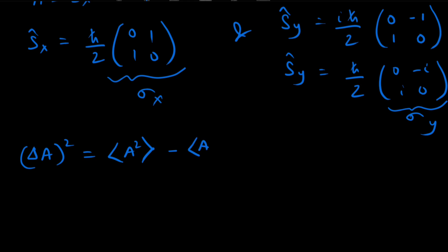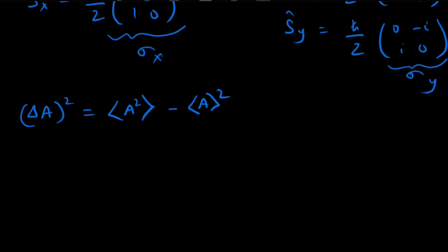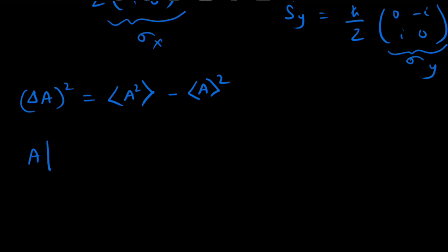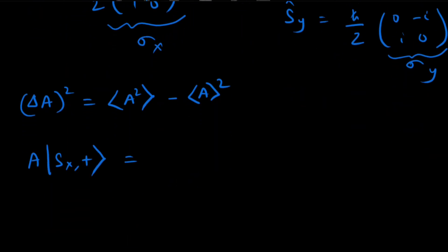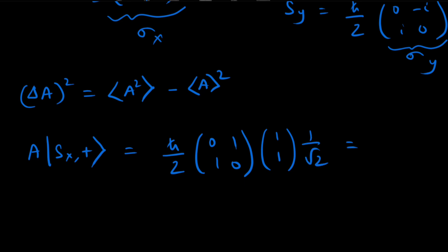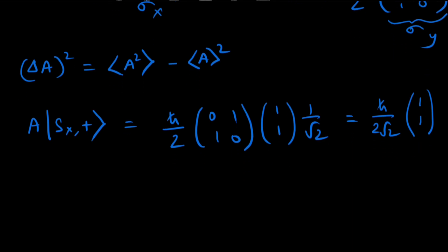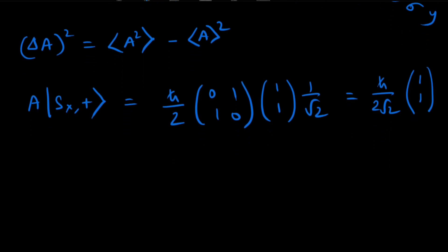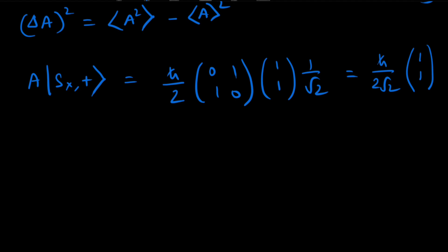Operating A (i.e., Sx) on |sx+⟩: (ℏ/2)[[0,1],[1,0]] acting on (1/√2)(1,1) gives (ℏ/2√2)(1,1). Operating A again to get A²|sx+⟩, we apply Sx once more to this result.